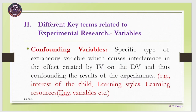A very important category is confounding variables — a specific type of extraneous variable that causes interference in the effect created by the independent variable on the dependent variable, thus confounding the results. These may include interest of the child, learning styles, learning resources, or environmental variables like temperature and noise level. These variables are bound to create an effect on the study and the researcher must take care of them. For example, a child's interest in science is indeed a confounding variable and must be addressed while conducting the research and interpreting findings.